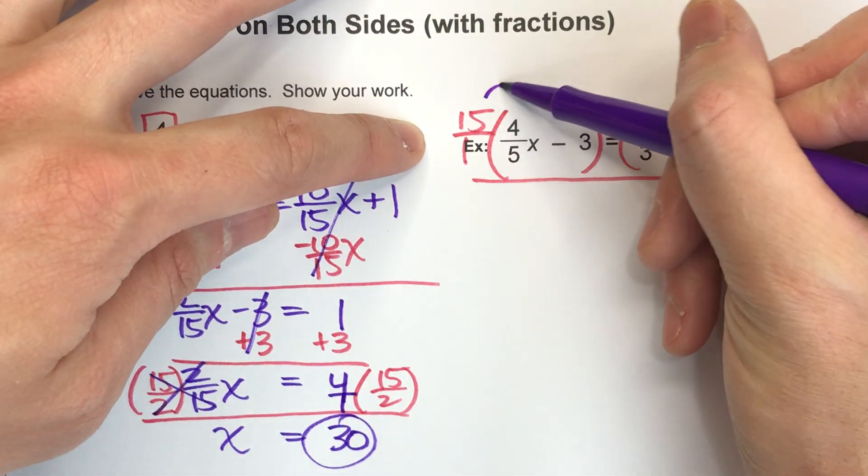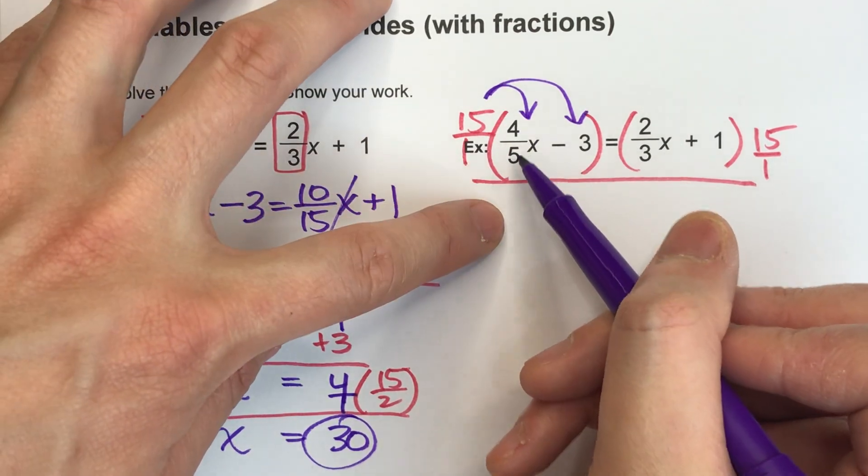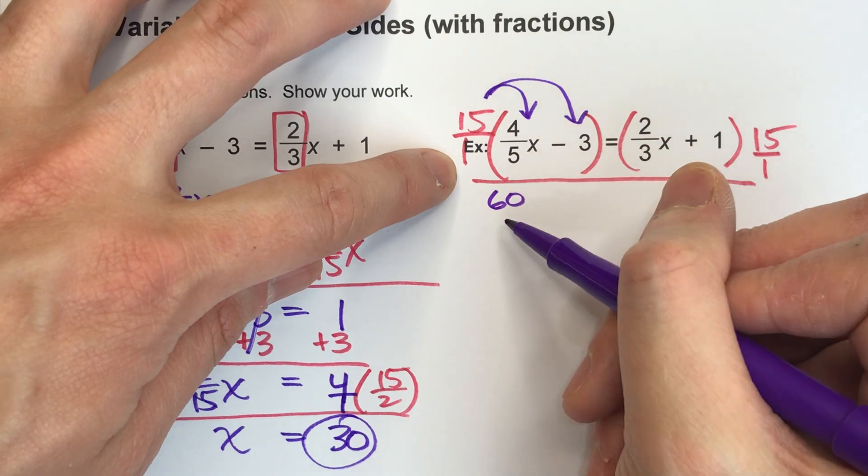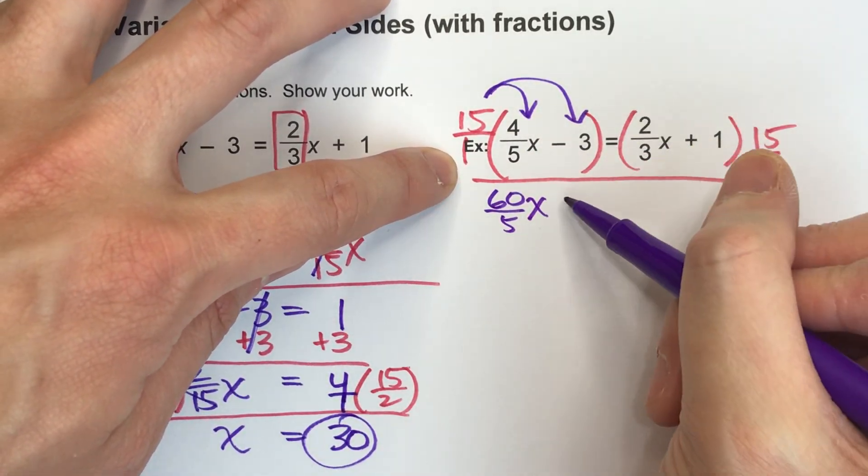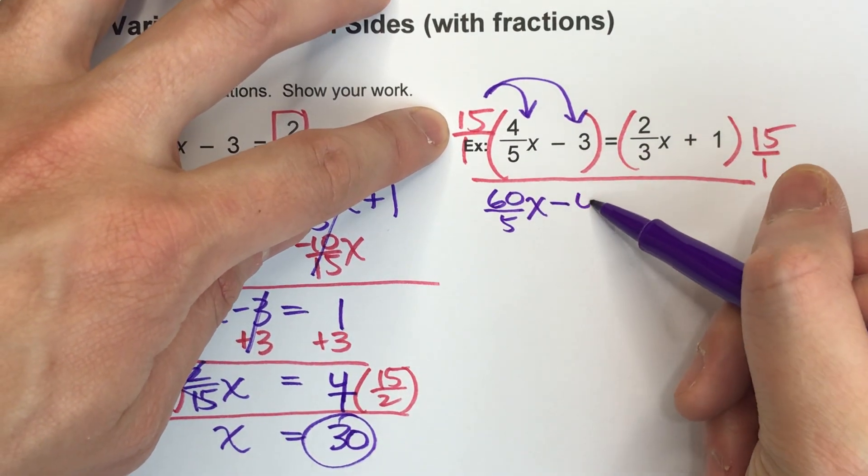So I have to multiply everything in here by 15. 15/1 times 4/5. 15 times 4 is 60, 1 times 5 is 5. So this is 60/5x. Minus, we also have to do 15 times 3, which is 45.